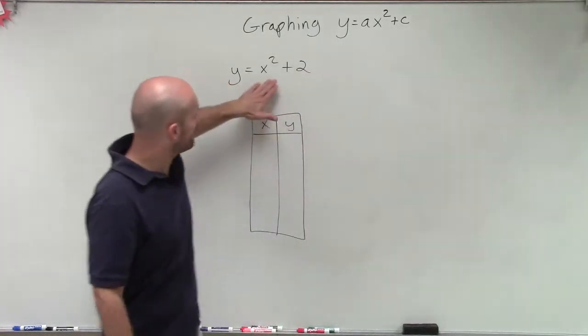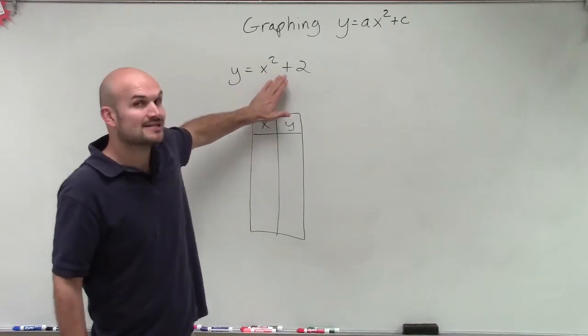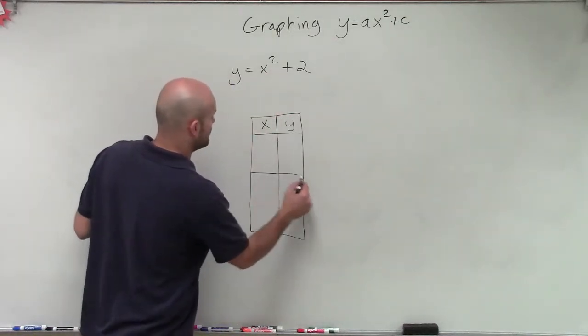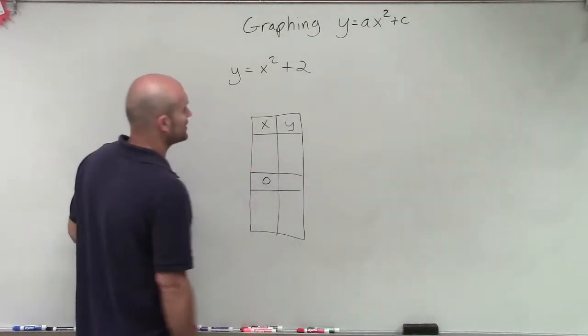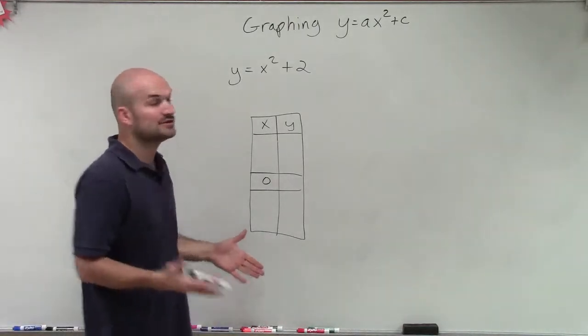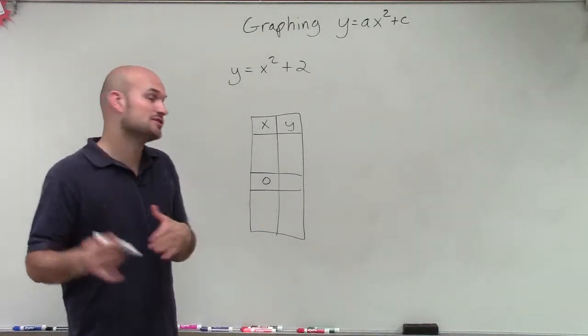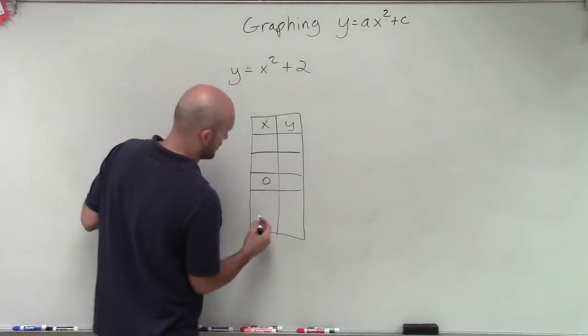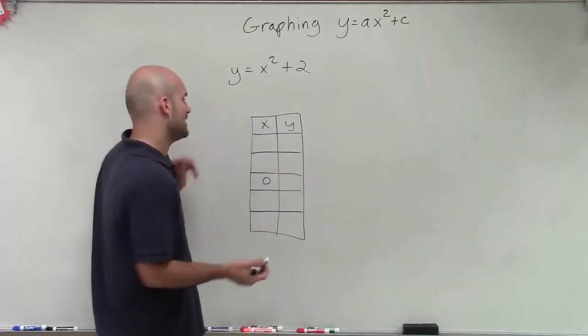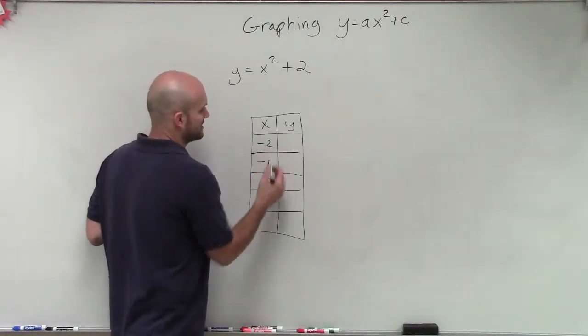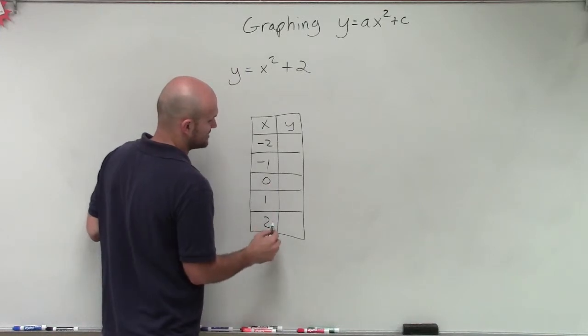Looking at the form of this quadratic, we know that our axis of symmetry is going to be at 0. And I will verify that for you here in just a second. Now what we need to do is just pick points to the left of 0 and to the right of 0 that we're going to evaluate for our x-coordinates. So I'm just going to keep it simple, and I'm going to pick points that are going to be very close to my axis of symmetry.